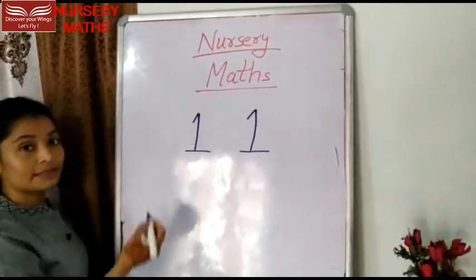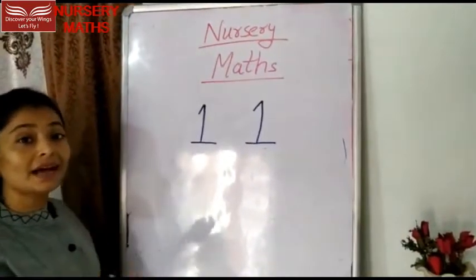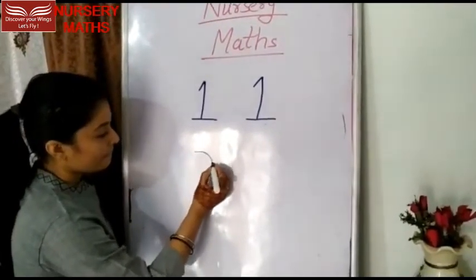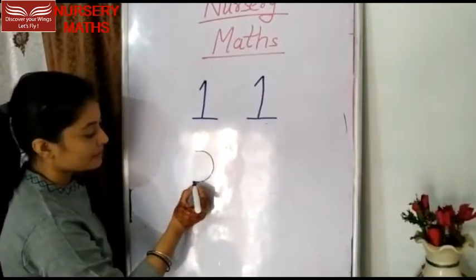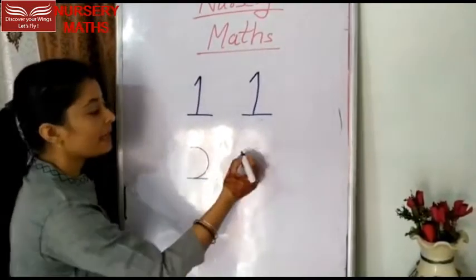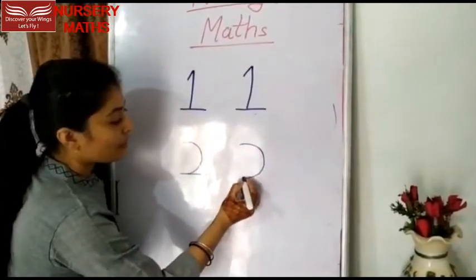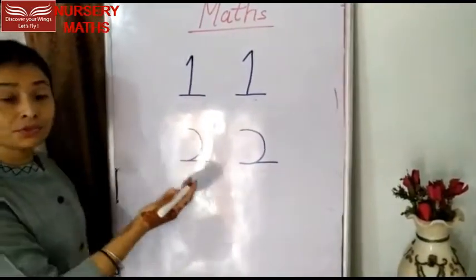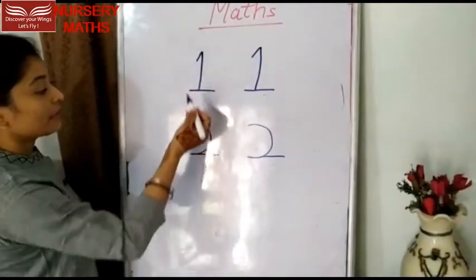Number 1. Now, number after 1? 2. Very good. Back open curve, sleeping line. Again. Back open curve and sleeping line. Our number 2. 1 and 2.